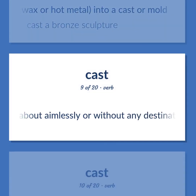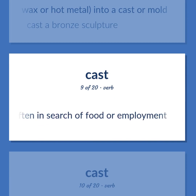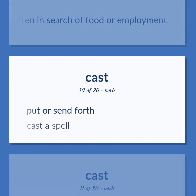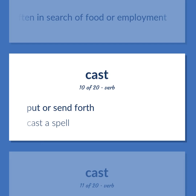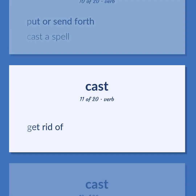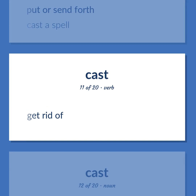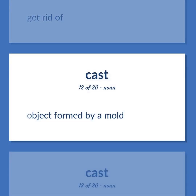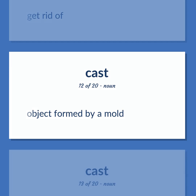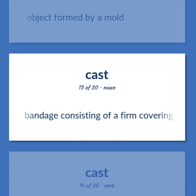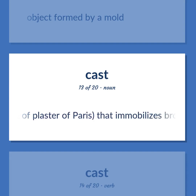Cast: Move about aimlessly or without any destination, often in search of food or employment. Put or send forth — cast a spell. Get rid of. Object formed by a mold. Bandage consisting of a firm covering, often made of plaster of paris, that immobilizes broken bones while they heal.